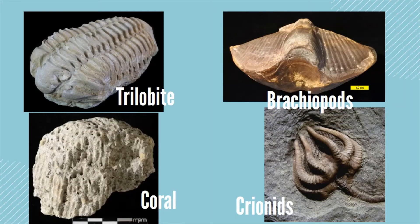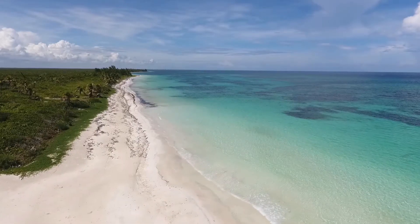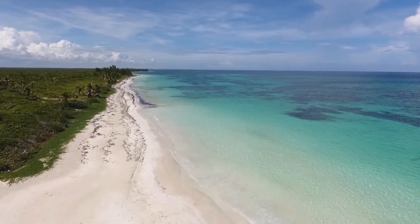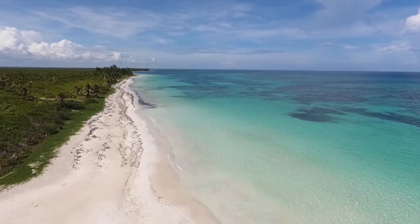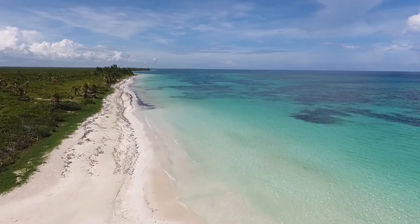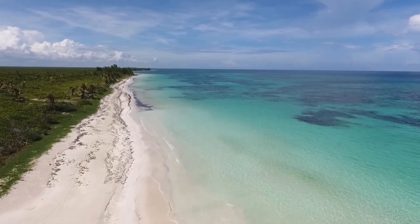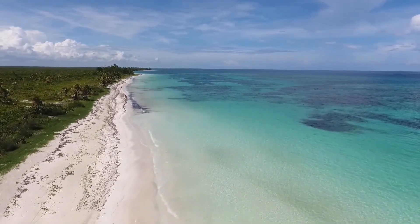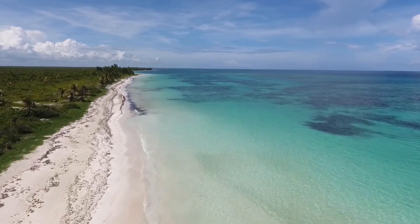However, fossils show the Midwest used to be much different. We find fossils like trilobites, coral, shells of brachiopods, and plants like crinoids, which are all from the ocean. In fact, these marine fossils show that the Midwest used to be under a warm tropical ocean that stretched the entire central U.S.